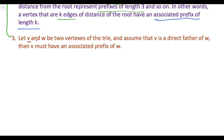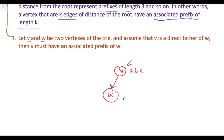The third idea: let v and w be two vertices of the trie and assume that v is the direct parent of w. Then the associated prefix of w is formed by taking the prefix up to vertex v — say a, b, c — and adding the character at w. So if w consists of character d, the associated prefix is a, b, c, d.